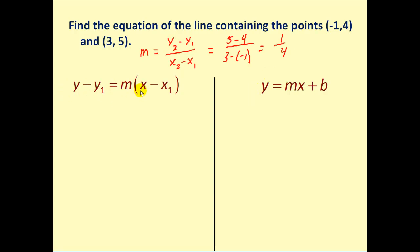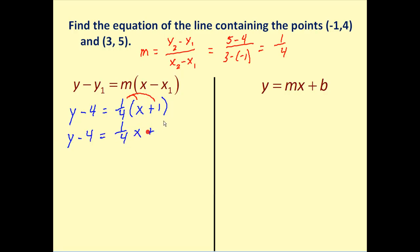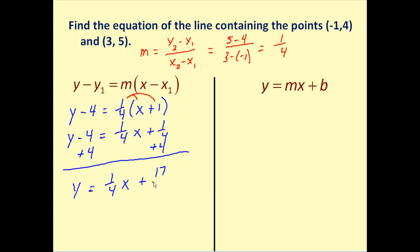Using point-slope form, we can choose either point — let's use (-1, 4). We write y minus four equals one-fourth times x minus negative one, which becomes x plus one. Solving for y: distribute to get one-fourth x plus one-fourth, then add four to both sides. Since four equals sixteen-fourths, we have y equals one-fourth x plus seventeen-fourths.